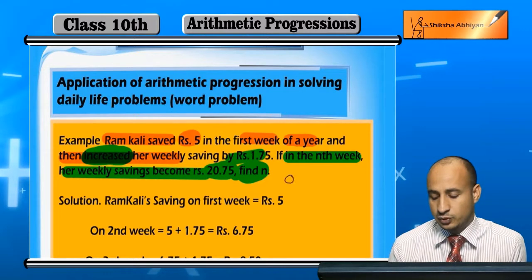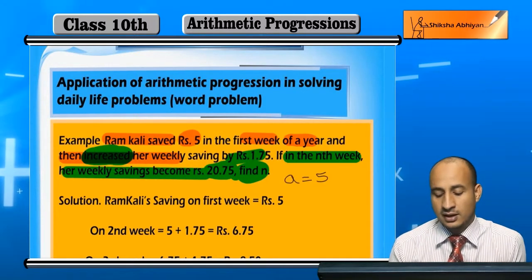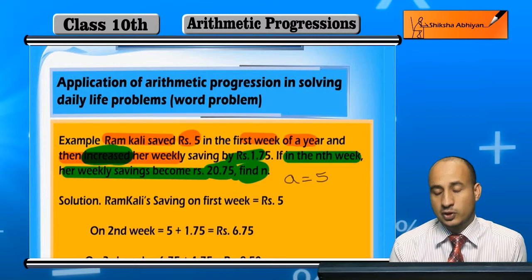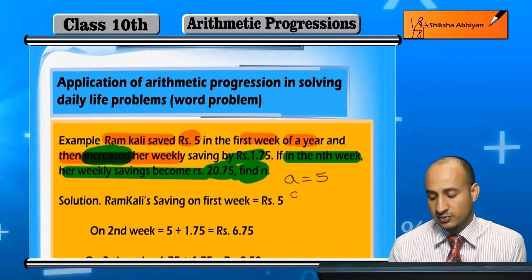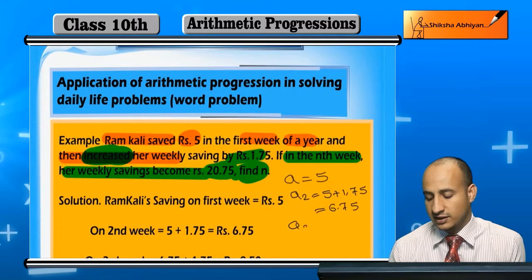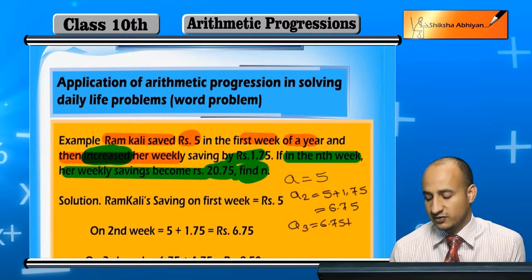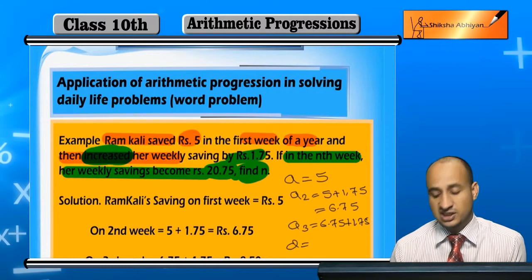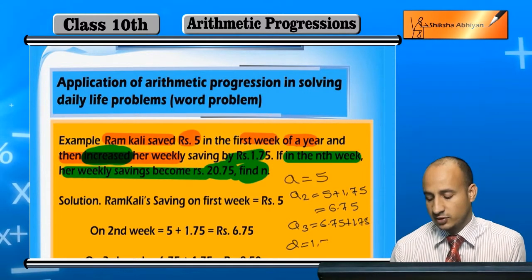The first saving is 5, and the increase every time is 1.75. So the 2nd week saving will be 5 plus 1.75, which is 6.75. Then the 3rd week saving is 6.75 plus 1.75. You can see the common difference here — how much is the common difference? 1.75.